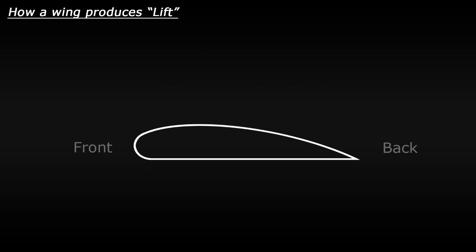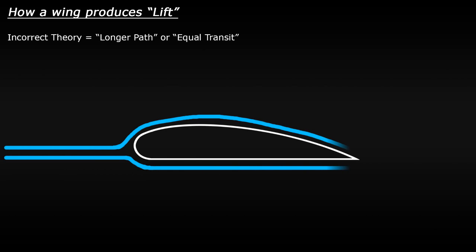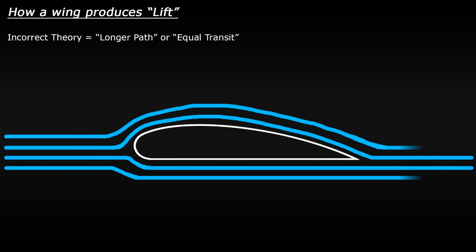So one of the most common but incorrect theories which is taught is something called the Longer Path or Equal Transit Theory, which is based on the Bernoulli Principle. The explanation that this theory gives is that the airflow, the air which is hitting the wing, splits as it hits the front of the wing. The air passes over and under the wing and rejoins at the back of the wing at the same time.